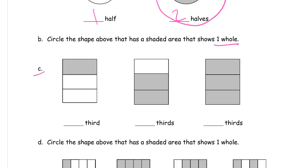For C, we have that's one of the thirds shaded in. Here, two of the thirds are shaded in, and here, three of the thirds are shaded in.